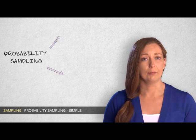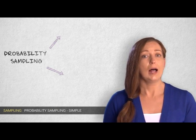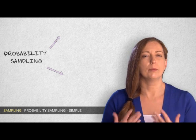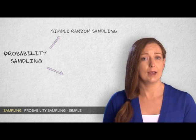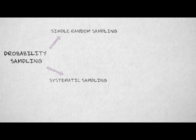There are several types of probability sampling. In this video, I'll discuss the two simplest types: simple random sampling and systematic sampling.